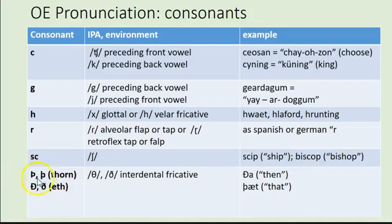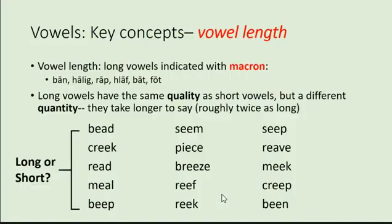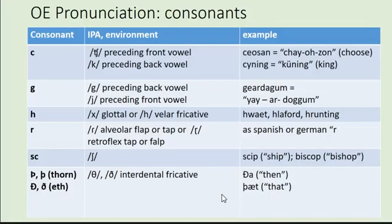Then we have the letters thorn (þ) and eth (ð), which aren't in modern English but appear in English all the way through the Late Middle English period. These are interdental fricatives — you put your tongue a little bit between your teeth and blow: TH. It can be voiced 'ða' or unvoiced 'þæt.' So 'ða' means 'then' and 'þæt' means 'that.' These are the main differences between Old English and Modern English consonants.